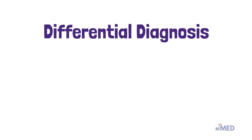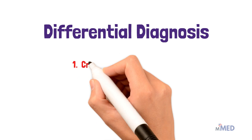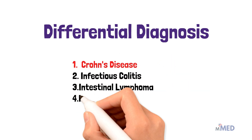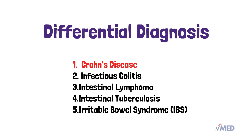The differential diagnoses of ulcerative colitis include Crohn's disease, which is very similar except that it occurs in all layers of the GI tract. Other differentials include infectious colitis, intestinal lymphoma, intestinal tuberculosis, and irritable bowel syndrome. When surgery is considered, it is important to distinguish Crohn's disease from ulcerative colitis because Crohn's involves all the layers of the GI tract.